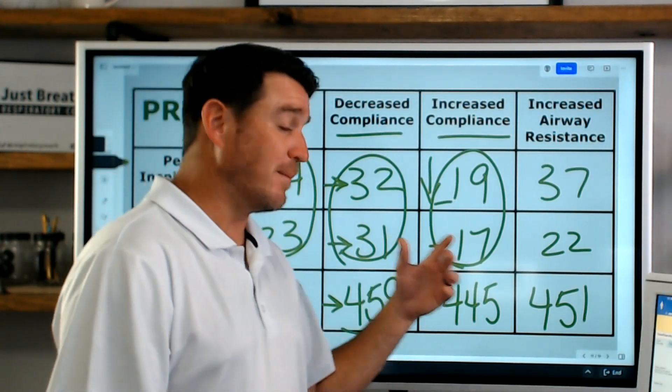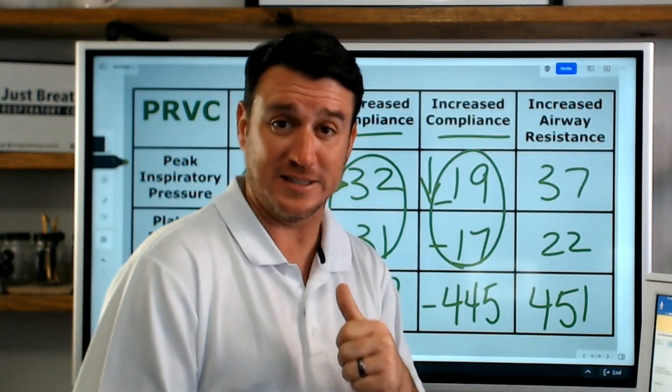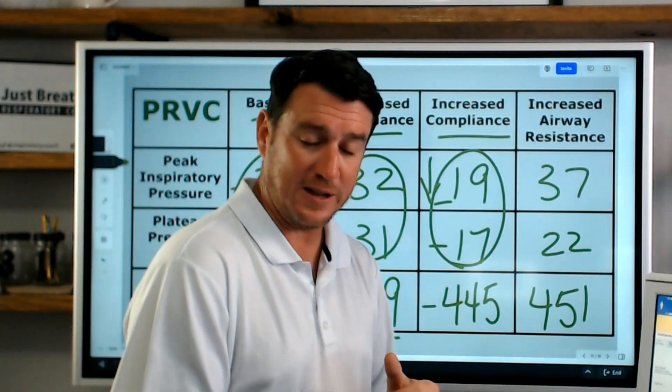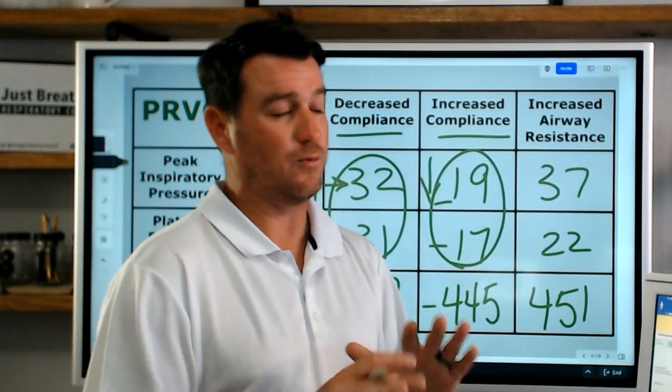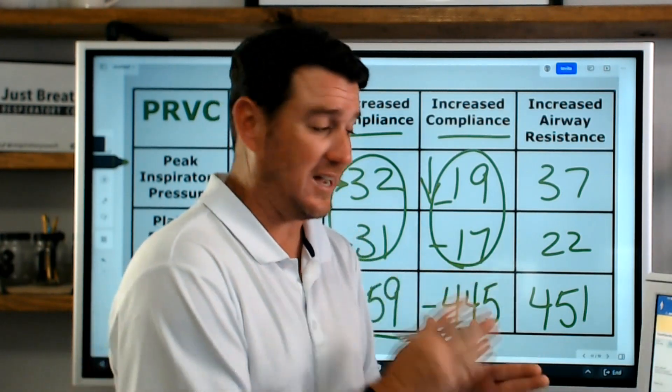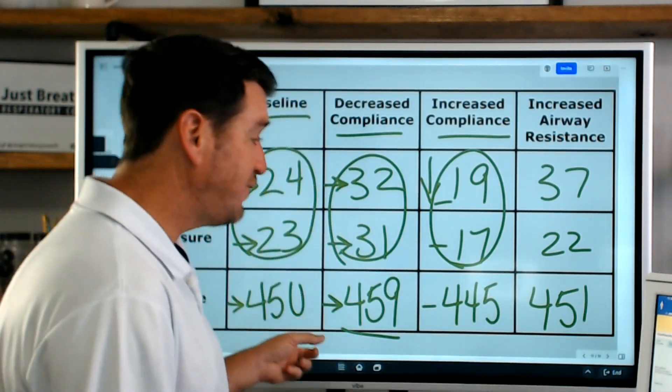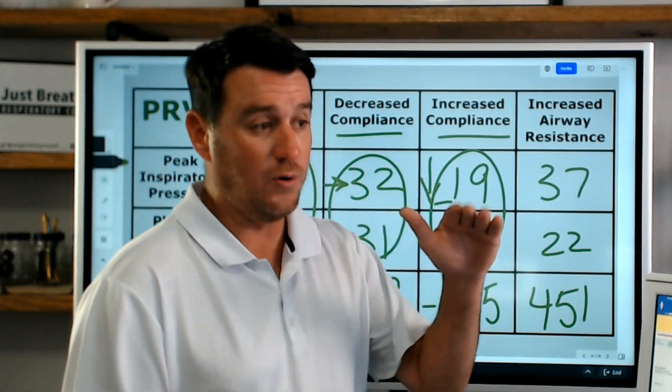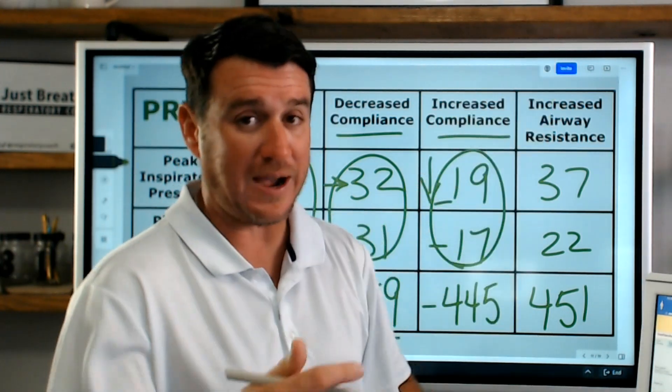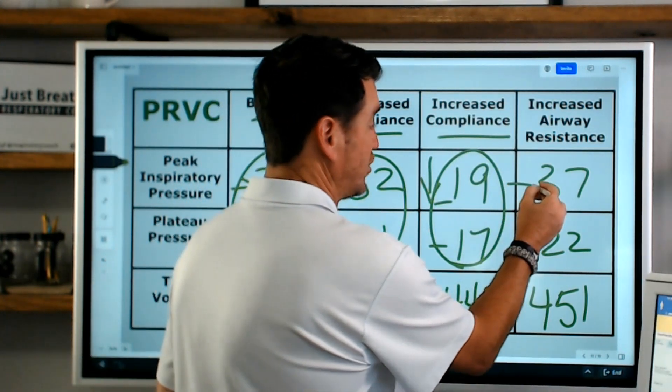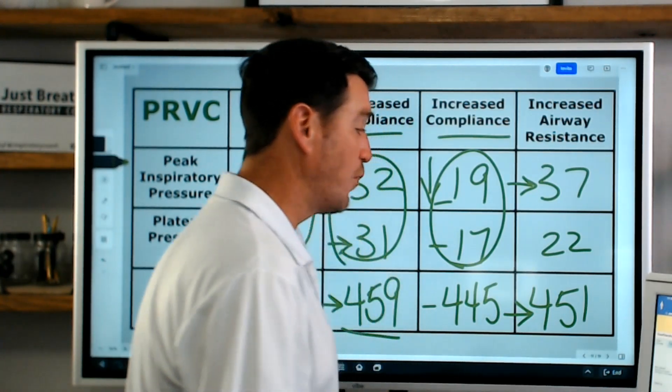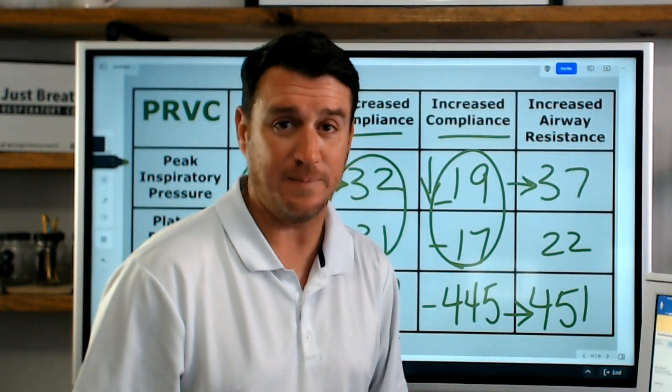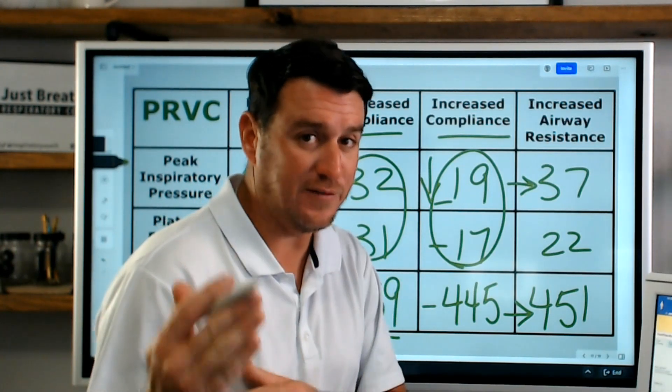Now the last one we ended on was increased airway resistance. And remember when we changed that, we put the airway resistance simulator into the circuit. We found that initially tidal volumes went way down and the ventilator said, wait a second, that volume is too low, I need a tidal volume of 450. And so it slowly increased pressure breath by breath until it got to a pressure of 37, which delivered a tidal volume of 451.